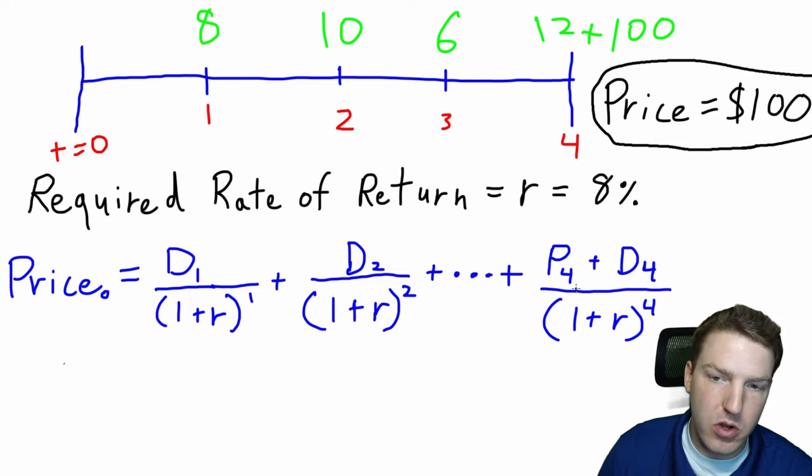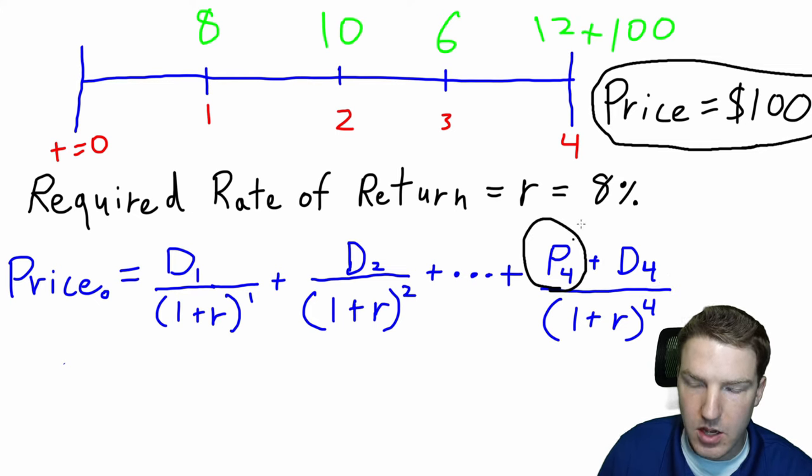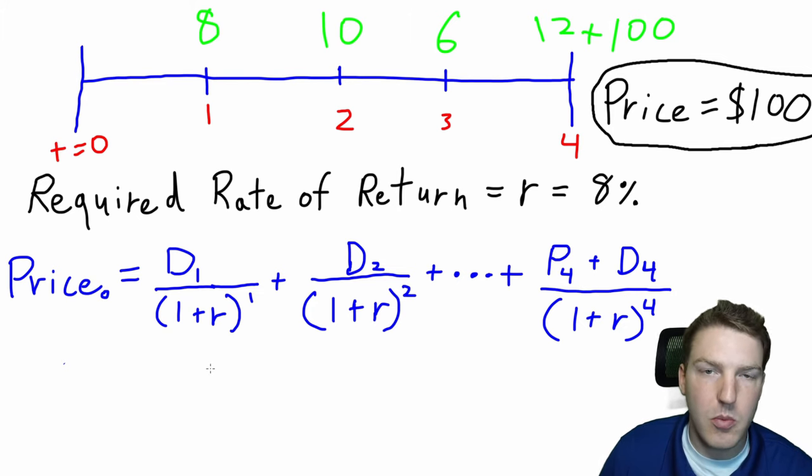But the last period of time is a bit different because we do have the dividend at time four, which is the $12 here. But we also add the price of the stock at time four that we expect, which is that $100, and we discount them all back.